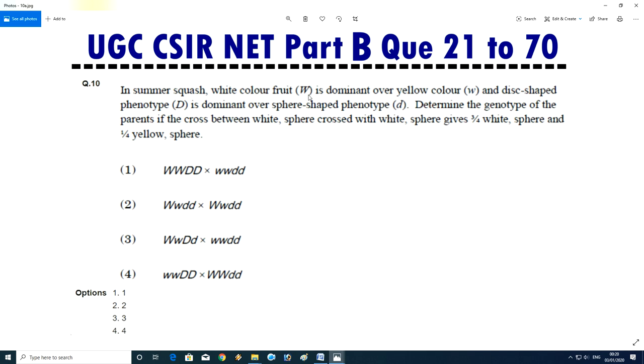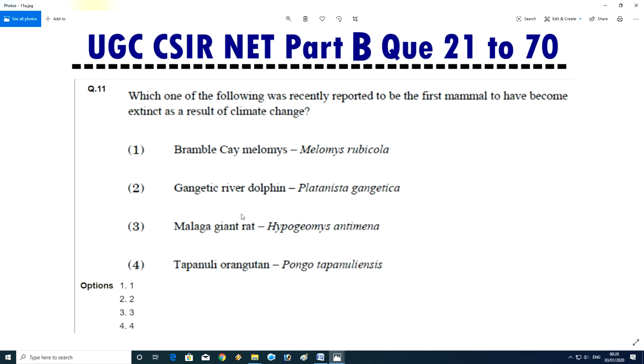Question No.10 - In summer squash, white color fruit capital W is dominant over yellow color small w, and disc shape phenotype capital D is dominant over sphere shape phenotype small d. Determine the genotype of the parent if the cross between white sphere cross with white sphere gives three-fourth white and sphere and one-fourth yellow sphere. Answer is B, this one combination.